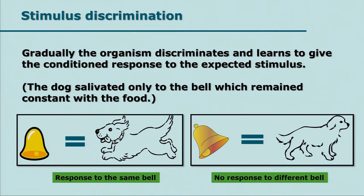The fourth process is stimulus discrimination. Initially generalization happens, but later the organism tries to discriminate and find out which stimulus actually gets it the food. In classical conditioning, the dog initially associated food with the bell, the colour of the light, and the footsteps, but later realized the bell was the only constant stimulus and learned to discriminate. Similarly, Skinner's rat initially kept depressing the bar hoping for food, but later learned to discriminate and press the bar only when the music was sounded.